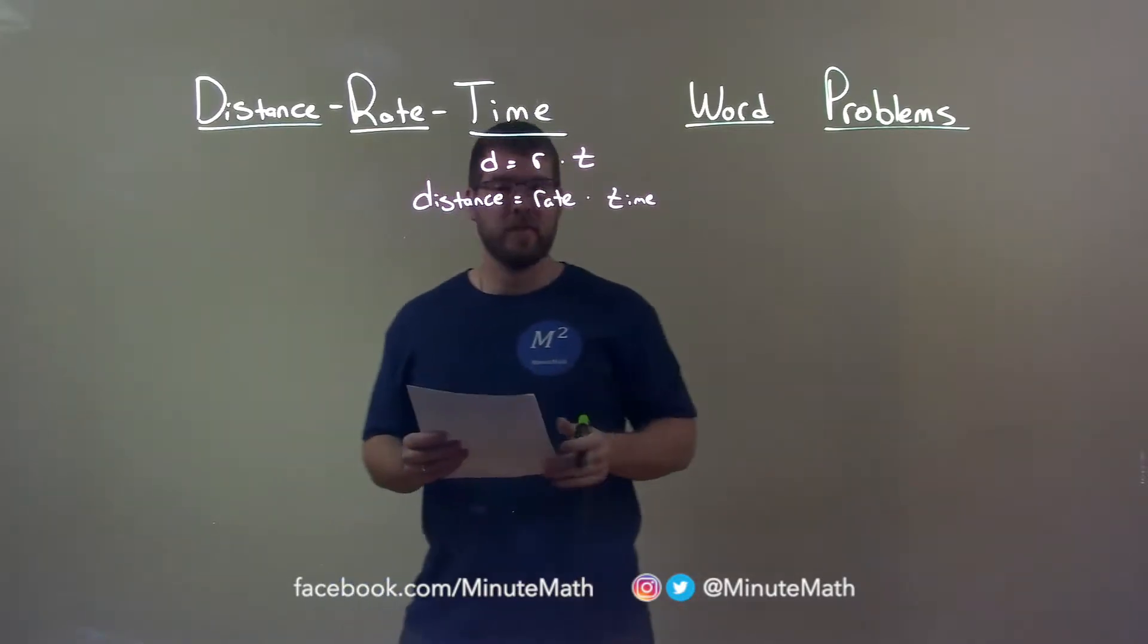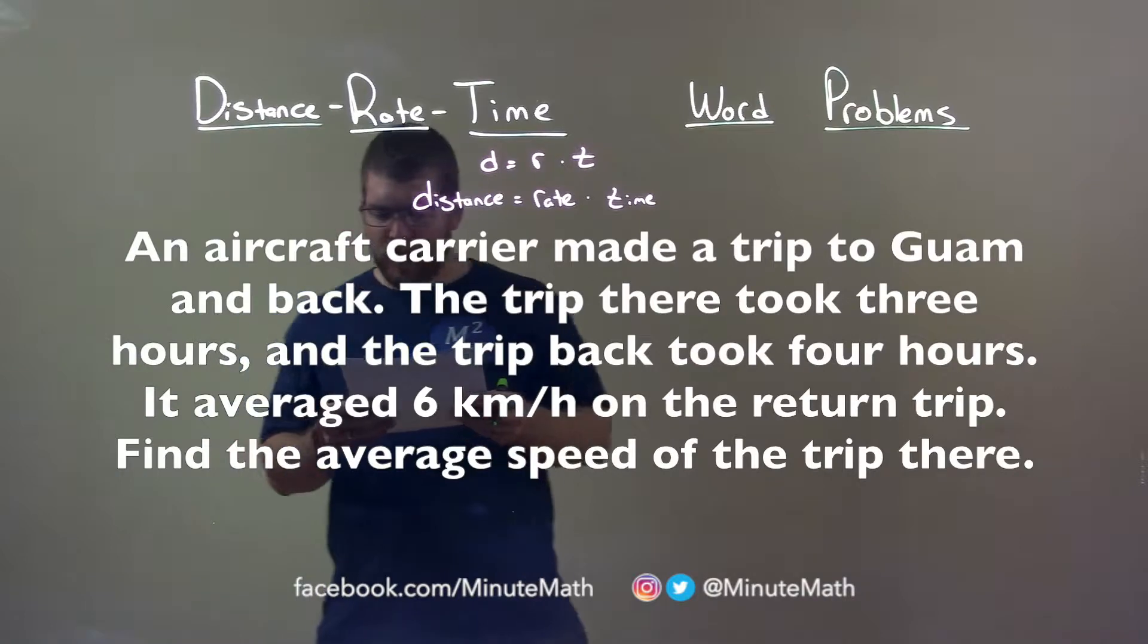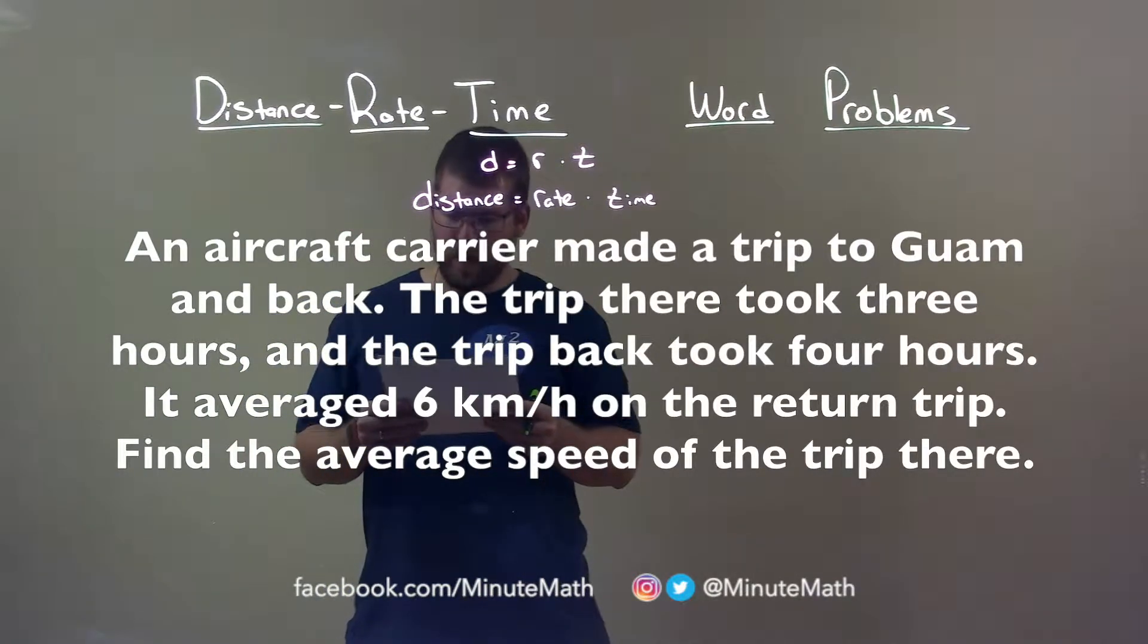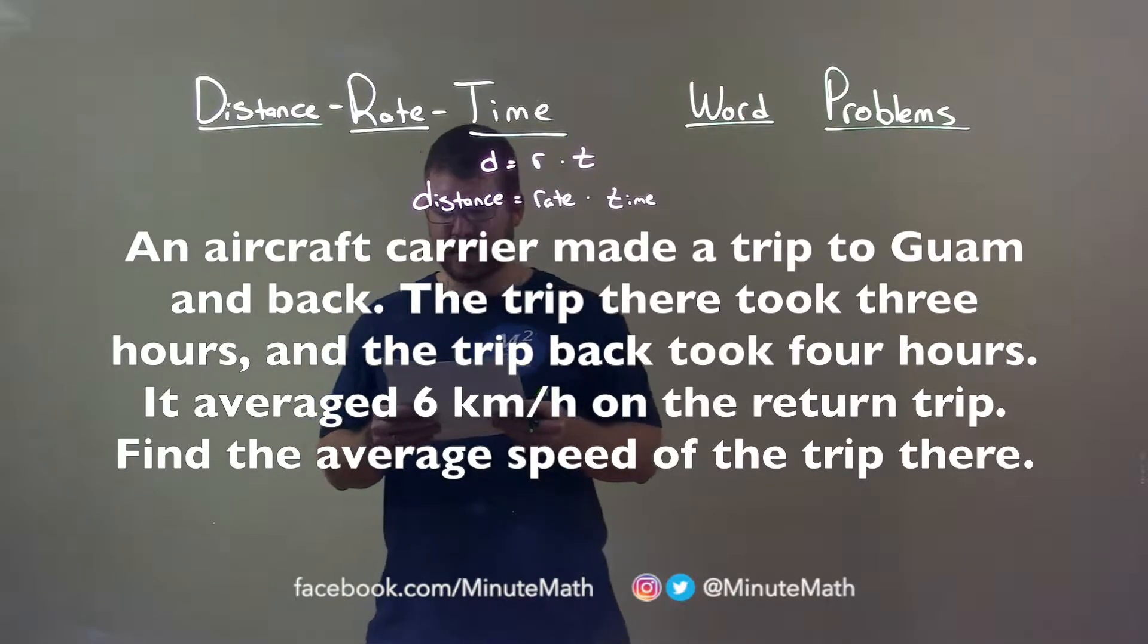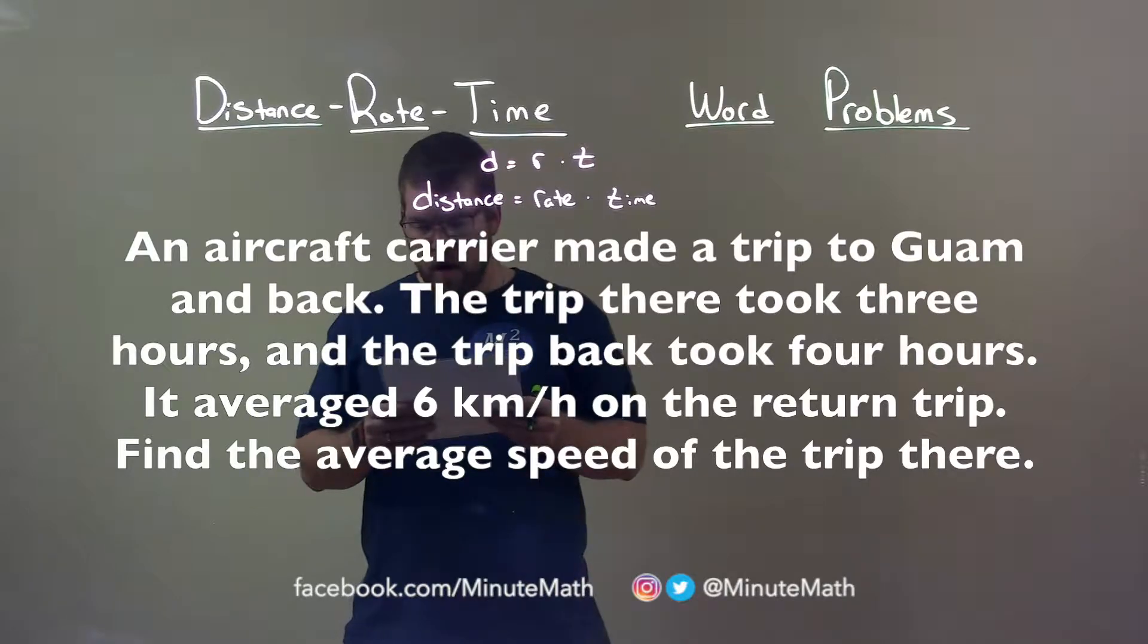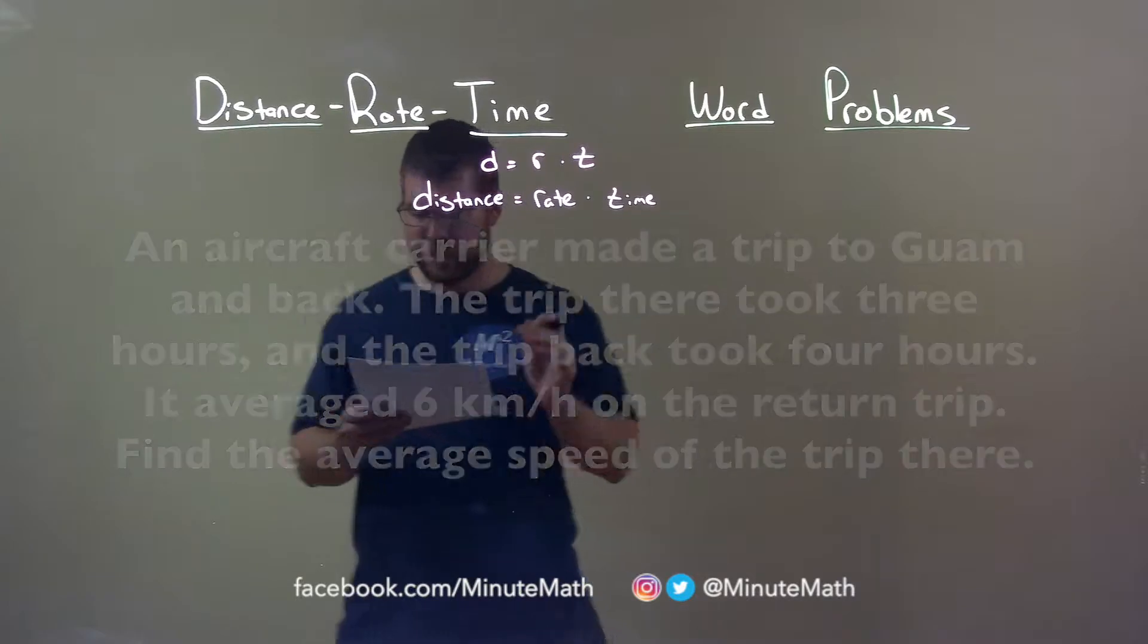If I was given this problem: An aircraft carrier made a trip to Guam and back. The trip there took three hours and the trip back took four hours. It averaged six kilometers per hour on the return trip. Find the average speed of the trip there.